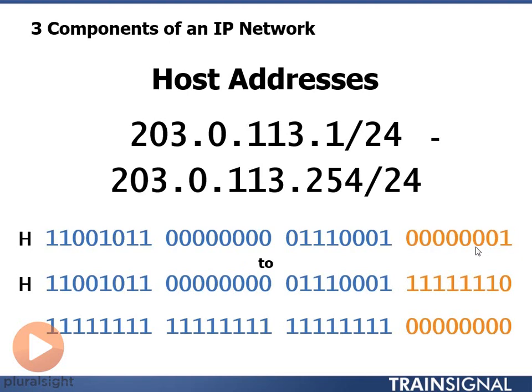If we add one to zero, we get one. So my first host address is always going to have all zeros in the host portion except the last bit, which is going to be a one. That will be my first host address, and I can actually apply that host address to a real device on an IP network.